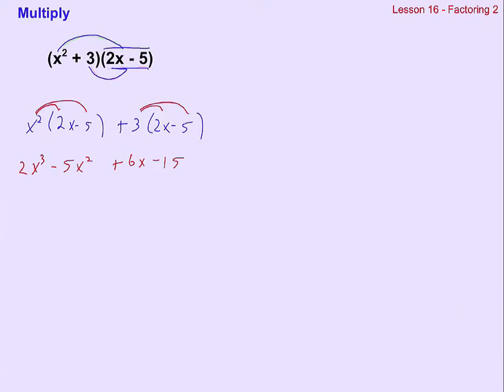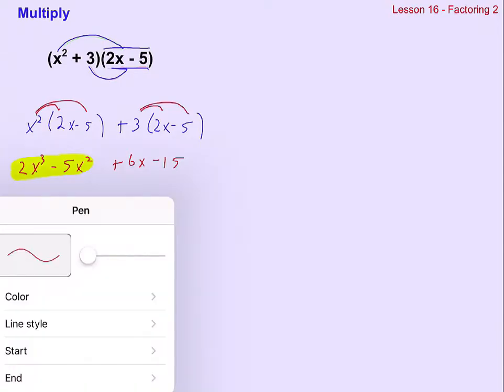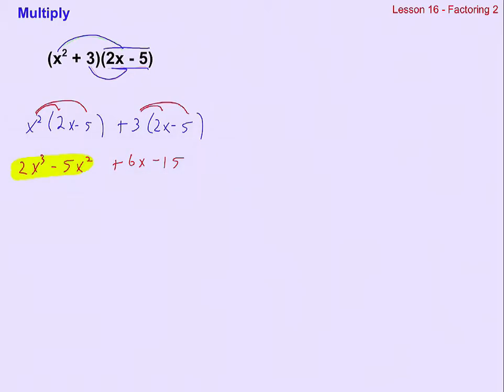We end up with a cubic polynomial. Cubic is a fancy word for starts with a cube, that's the highest degree in there. What I want you to notice is that when we see the finished product, you can see the two GCFs in each little grouping here. If you look at the first part of this cubic, you can see the x squared. You can see the x squared in here that gets distributed out, and in the 6x minus 15, you can see the 3 in that also.